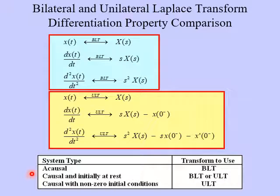All right, so here's a little table to kind of summarize when we use each of these types of transforms. So if the system is a-causal, then we have to use the BLT. The reason for this is the BLT works with negative times as well as positive times. The ULT does not allow us to do that. So for a-causal systems, we use BLT.